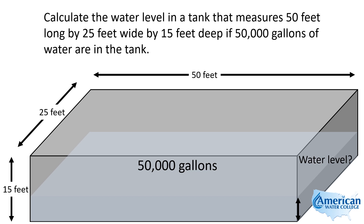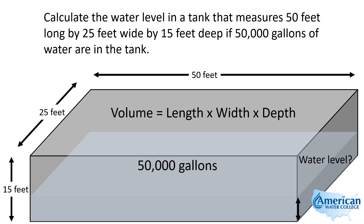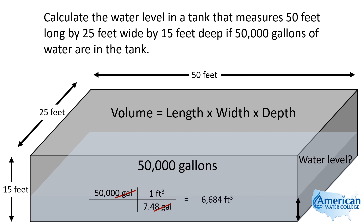Here's how I'd solve this problem. I'd use the formula: volume equals length times width times depth, and I'm going to solve for the depth. First I need to know how many cubic feet is 50,000 gallons. I'm going to convert 50,000 gallons to cubic feet using the equivalent that says there are 7.48 gallons for every cubic foot. The gallons divide out, so 50,000 divided by 7.48 gives me a total of 6,684 cubic feet in the tank.